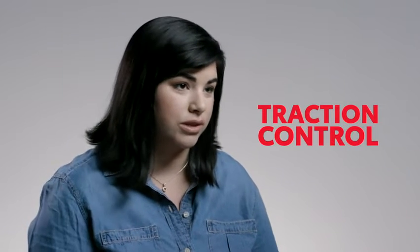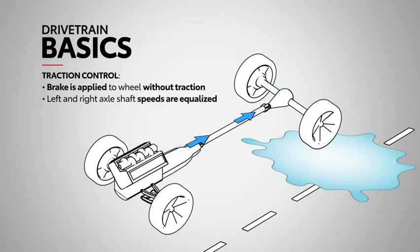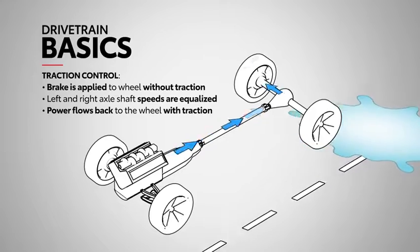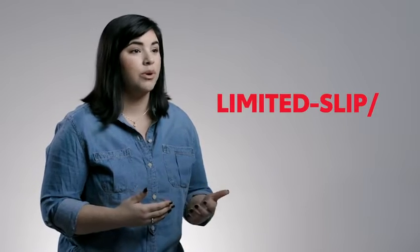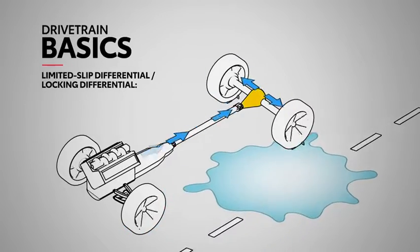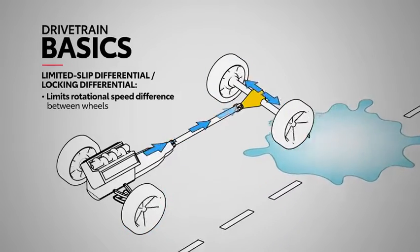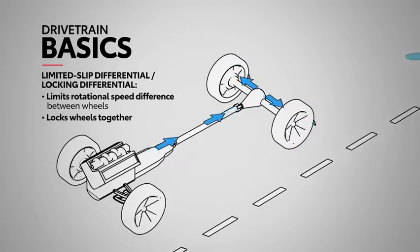For many situations, this can be mitigated with modern traction control systems, which momentarily apply the brake on the spinning wheel, sending power back across the axle. Another way to get around this is by using a limited slip or locking differential instead, which can limit the amount of slip between the two wheels or even just lock them together entirely.